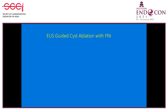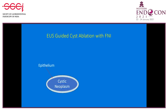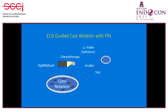If we use injection to perform EUS-guided ablation, how is this done? If you have a cystic tumor in the pancreas lined by epithelium from which malignancy may arise, you take an EUS FNA needle and inject chemotherapy into it. If that is allowed to stay within the cystic tumor, over time the cyst might shrink in size because there is less viable epithelium, and eventually develop resolution — as was seen with radiofrequency ablation.